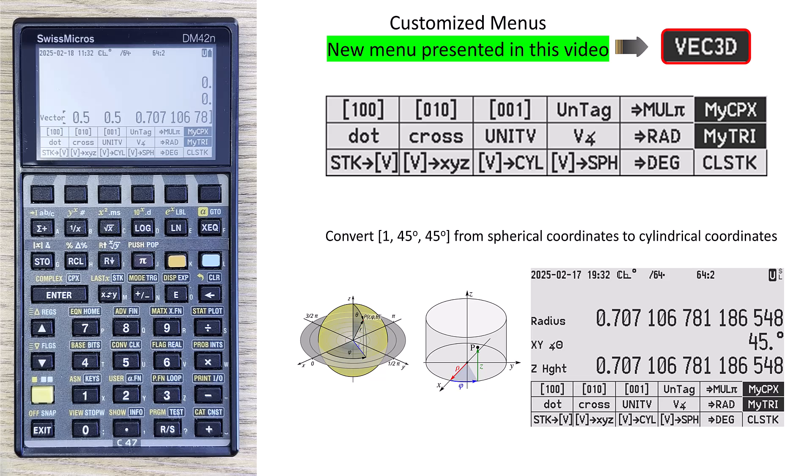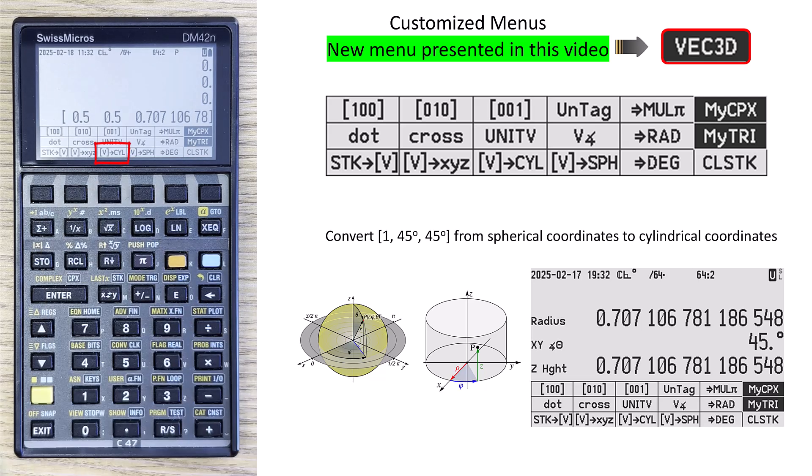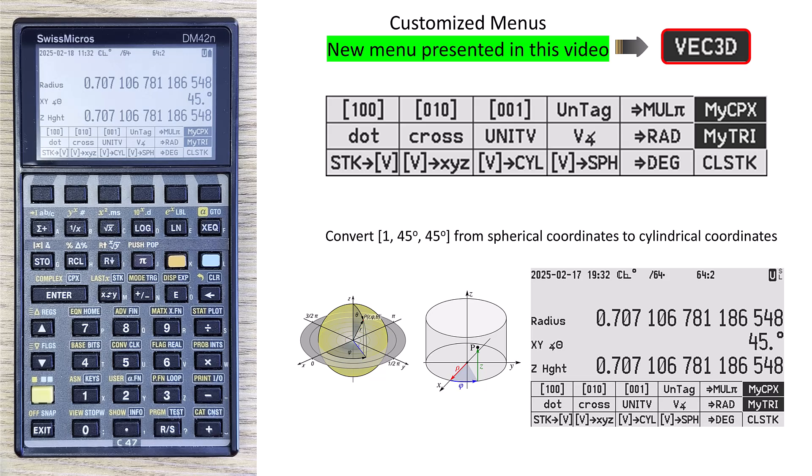When I press stack to vector, it pulls it in. The vector is always put into rectangular coordinates because there's no way to tag entries in the matrix or in the vector. But now, to get it to cylindrical, I just press the key vector to cylindrical, and there it is. It's converted from spherical to cylindrical coordinates.